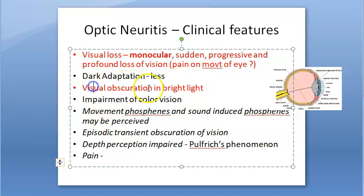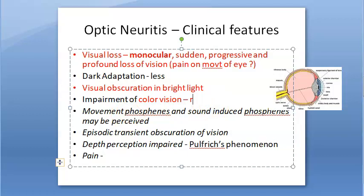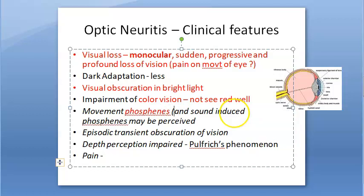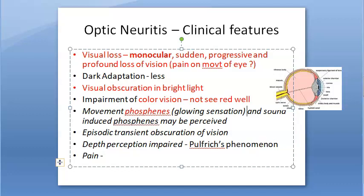In bright light, patients cannot see well — cones are involved — so color vision is also impaired. Impairment of color vision is always present in optic neuritis; patients typically observe reduced vividness of saturated colors and do not see red very well. Movement phosphenes and sound-induced phosphenes may also be perceived — phosphenes refers to glowing sensations produced by non-photic or so-called inadequate stimuli.